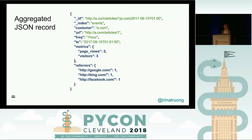This is my aggregated JSON output record — the result I want to get out of this job. It looks like a JSON dict. I have a couple of special fields such as ID, which is a unique identifier to index things in Elasticsearch. My aggregated record has metrics such as page views and visitors, and then a dict of referrers showing how many people came from which website. This is a real-world example of what my company actually does.